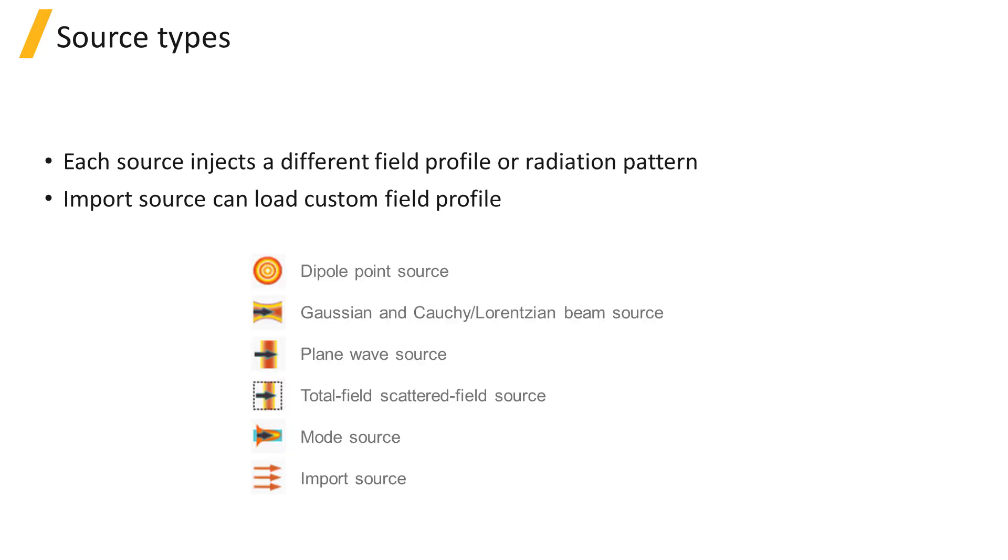Different types of sources are available in FDTD solutions to represent different field profiles. The available sources are listed here, and include the plane wave source, Gaussian beam, dipole, mode, total field scattered field, as well as an import source to specify a custom field profile.